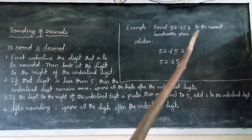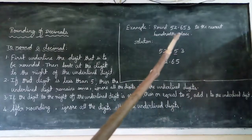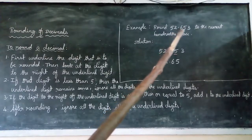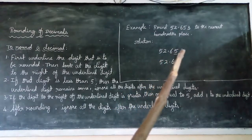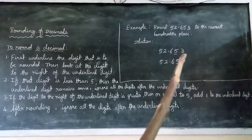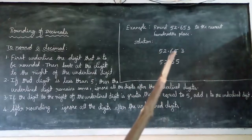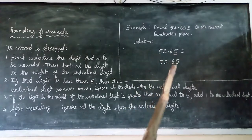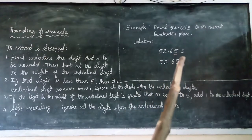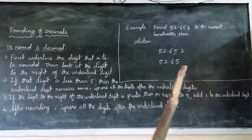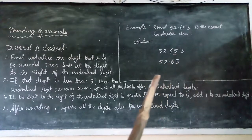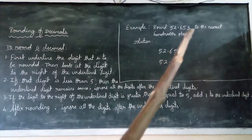Round 52.653 to the nearest hundredths place, which is 2 decimal places. The hundredths place is the second digit after the decimal point. The right-side digit is 3, which is less than 5, so the underlined digit remains the same. Ignore the digits to the right. The answer is 52.65.